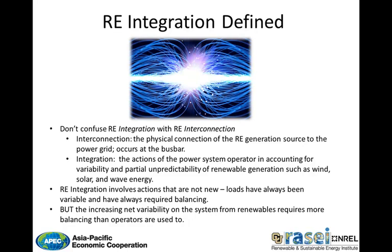Ordering generation dispatch and scheduling transmission according to uncertainty has been part of operating the power grid since its inception over a hundred years ago. This is due to a number of factors inherent in the power system. First, loads — the demand side of the power grid — are variable. We turn light switches, air conditioners, ovens, and televisions on and off according to our desires as consumers, with no regard for the impact of that action on the power system. Second, even conventional controllable generation is not 100% reliable. Plants may fail, or go offline unexpectedly, or need to be shut down for scheduled maintenance. Grid operators therefore have a pre-existing set of tools for both following changes in load throughout the day and ensuring that adequate reserves are standing by in case of an emergency.